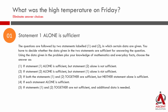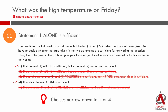Since Statement 1 alone is sufficient, we know we are going to zero in on answer choices A or D — either Statement 1 alone is sufficient, or each statement alone is sufficient. We eliminate answer choices B, C, and E.